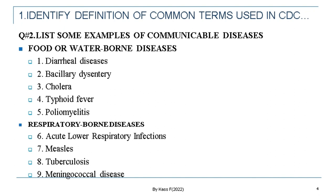Once you have defined what communicability is, the next question will be: can you list some of the common communicable diseases in your setup? Here we have the categories of communicable diseases. For example, we have food or waterborne diseases — diarrheal disease, bacillary dysentery, cholera, typhoid fever, poliomyelitis. And under respiratory-borne diseases, we have lower respiratory infections, measles, tuberculosis, and meningococcal disease.